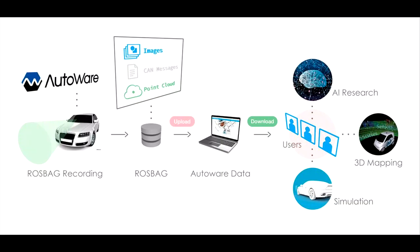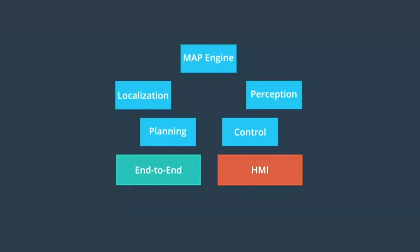ROS provides a very important functionality called ROSBag. ROSBag allows you to replay real data — you don't even need Gazebo or a real car. Someone can drive around, collect LiDAR and camera data, log it using ROSBag, and you can replay it as if the car is driving again. It's a deja vu world where you can try different algorithms. Autoware also supports this. You can actually go to Autoware's website and download real ROSBags that are gigabytes worth of real-world data.